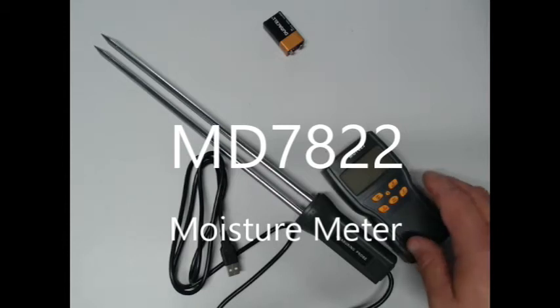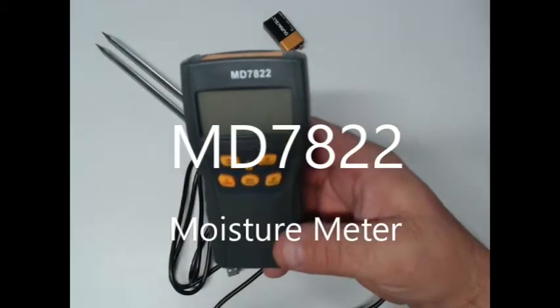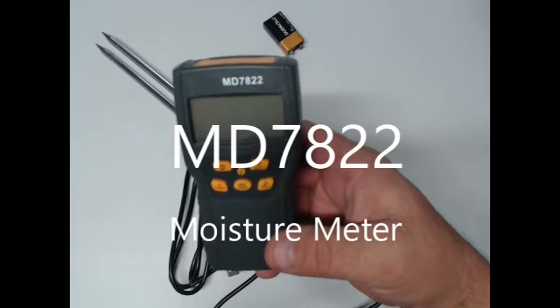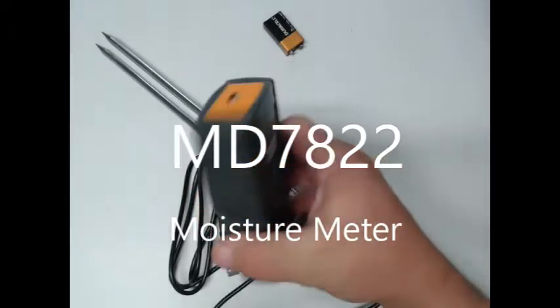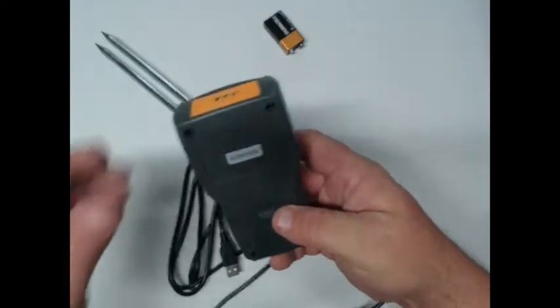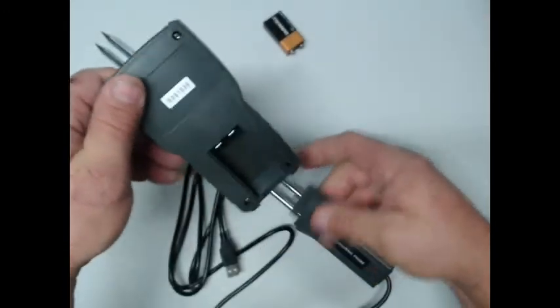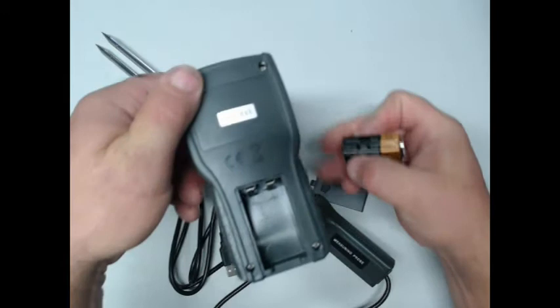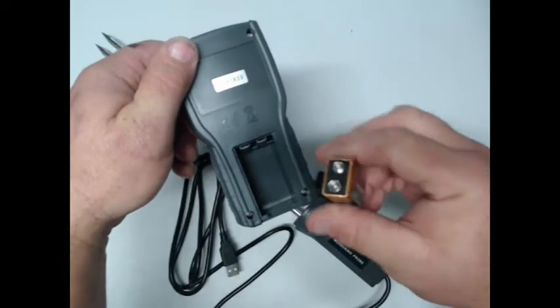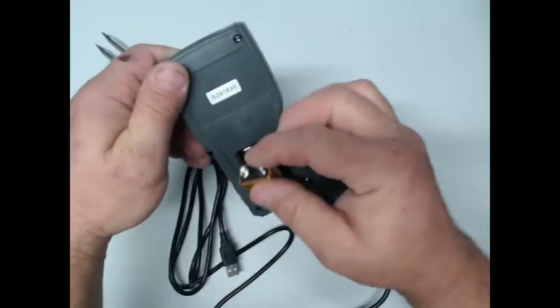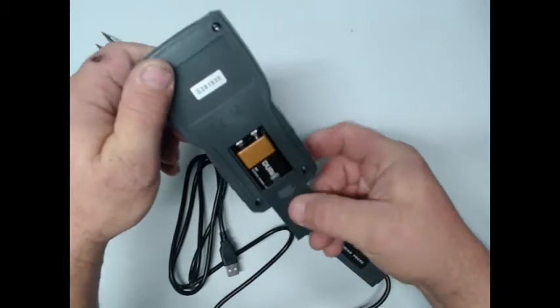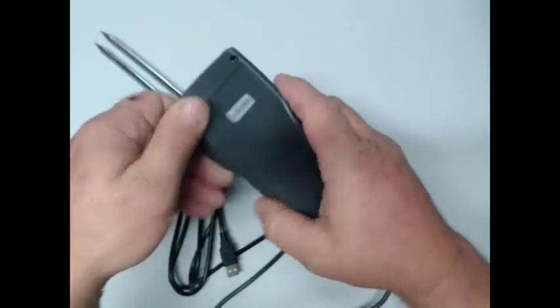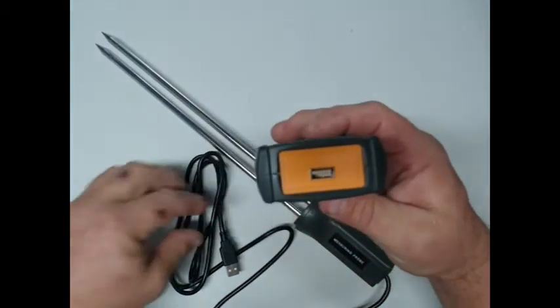This is the MD7822 moisture meter and it just takes a little 9-volt battery. Make sure it's in there right, and then it just plugs in.